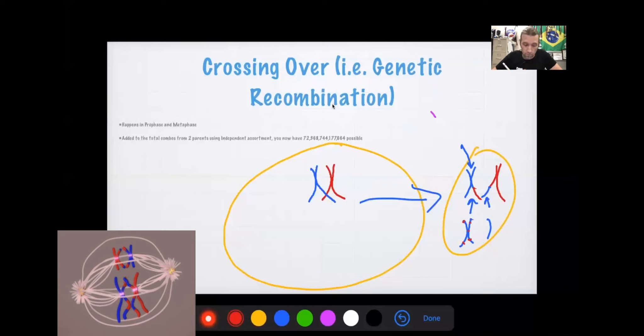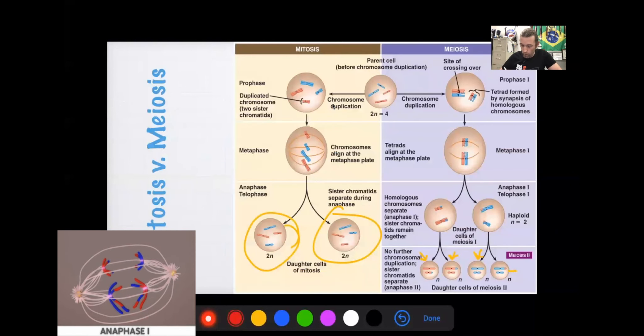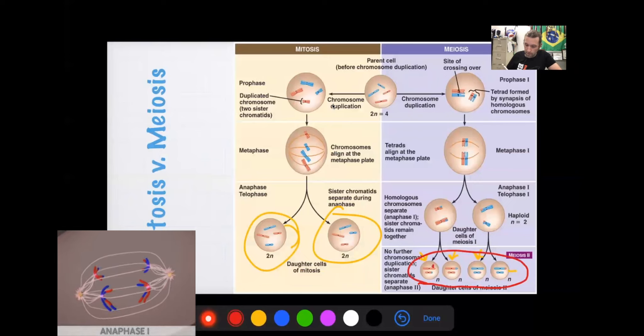So anyways, that is crossing over and that is independent assortment. And that's how it basically works. Now, from here, these will split one more time and you will end up with what you see down here where you have some cells that have a lot of dad's DNA with some of mom's mixed in and vice versa. Sometimes it's half and half, the general mix of stuff versus what happens in mitosis, which is exact copies.